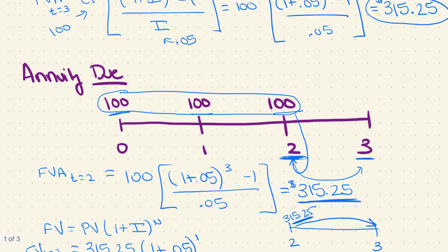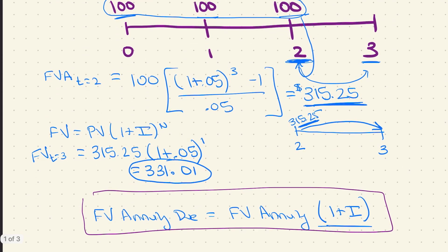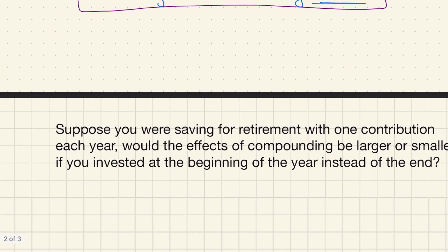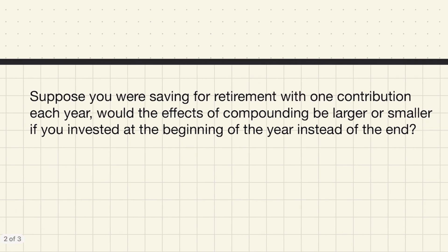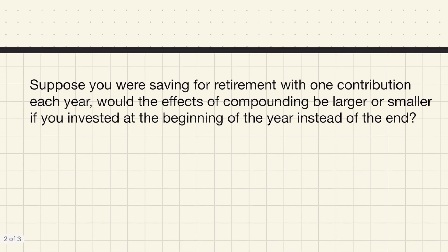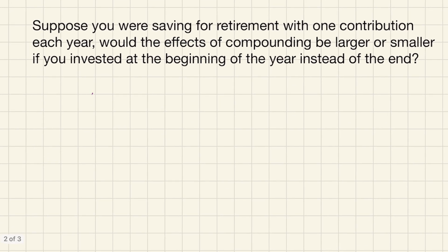Now let's think about the interpretation of these two numbers that we just calculated. So suppose you are saving for retirement with one contribution each year. So you're just saving one lump sum each year. Would the effects of compounding be larger or smaller if you invested at the beginning of each year instead of the end? So let's look at a little hypothetical timeline here. Suppose again, we just had those hundred dollar cash flows.